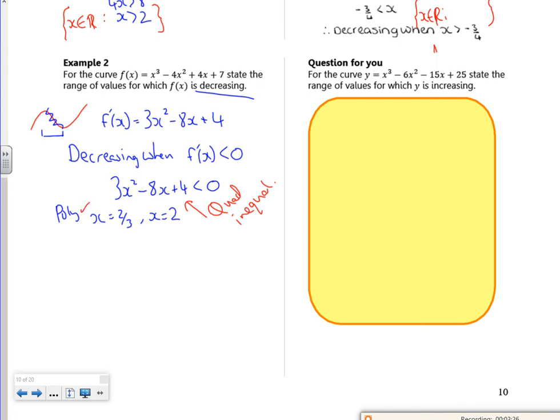I graph it, I identify the region. So solve it, graph it, identify the region. Less than is below the x axis. So I'm looking between these numbers here. So I know it's 2 thirds, less than x, less than 2.